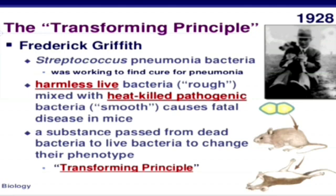Griffith was able to kill bacteria by heating them. He observed that heat-killed S-strain bacteria injected into mice did not kill them. When he injected a mixture of heat-killed S and live R-bacteria, the mice died. Moreover, he recovered living S-bacteria from the dead mice. He concluded that the R-strain bacteria had somehow been transformed by the heat-killed S-strain bacteria. Some transforming principle transferred from the heat-killed S-strain had enabled the R-strain to synthesize a smooth polysaccharide coat and become virulent. This must be due to the transfer of genetic material.